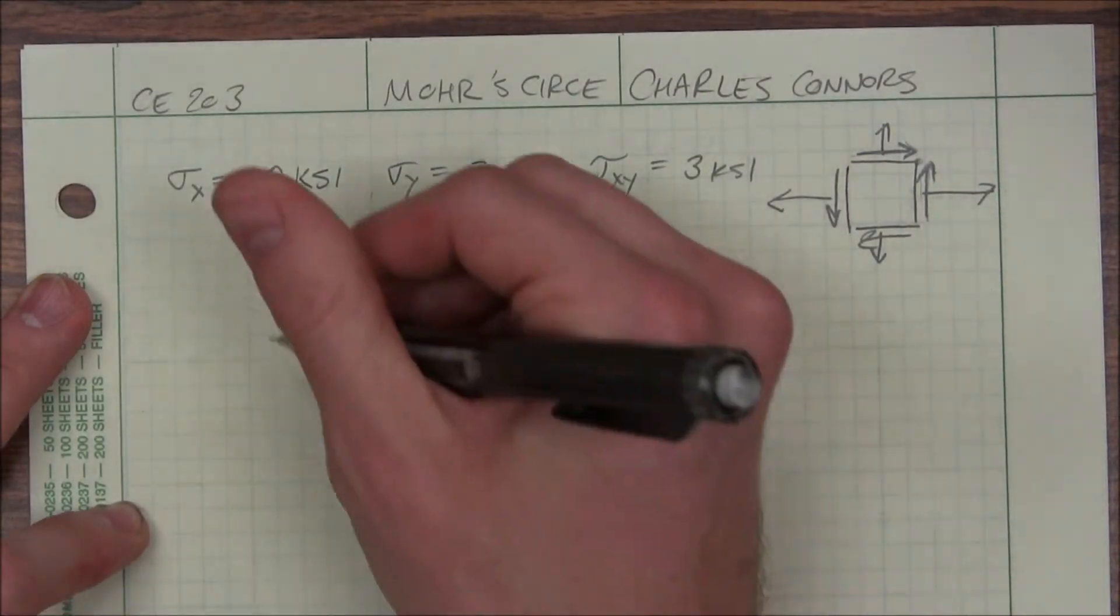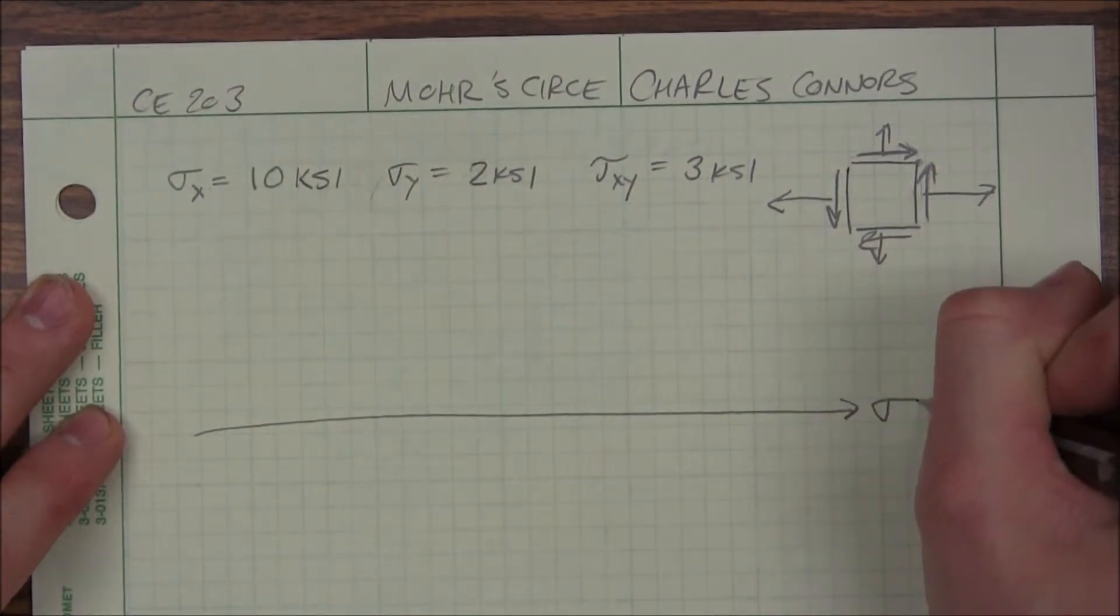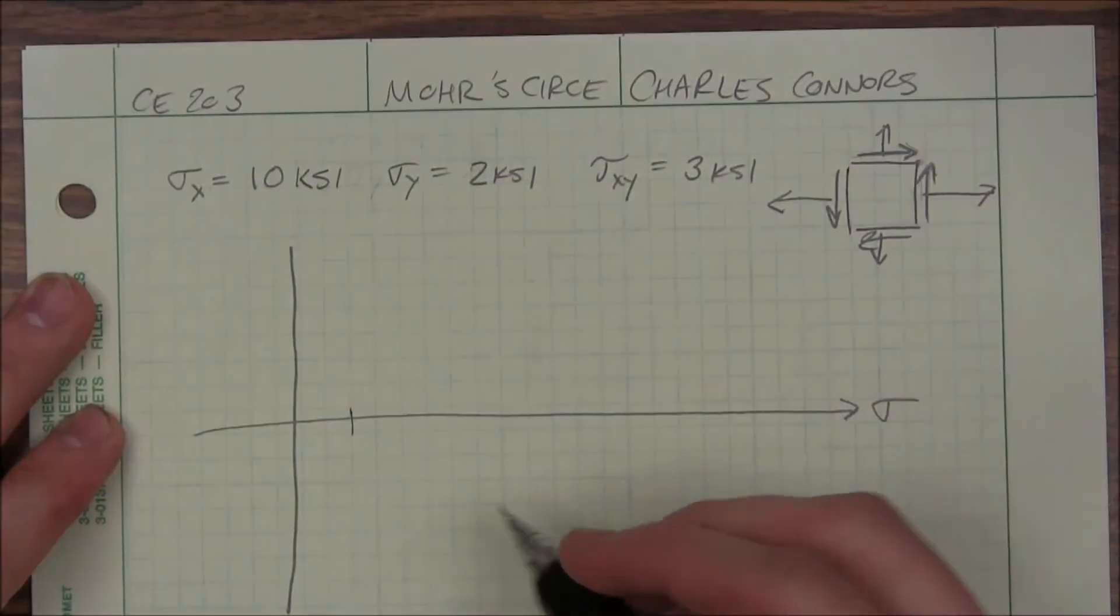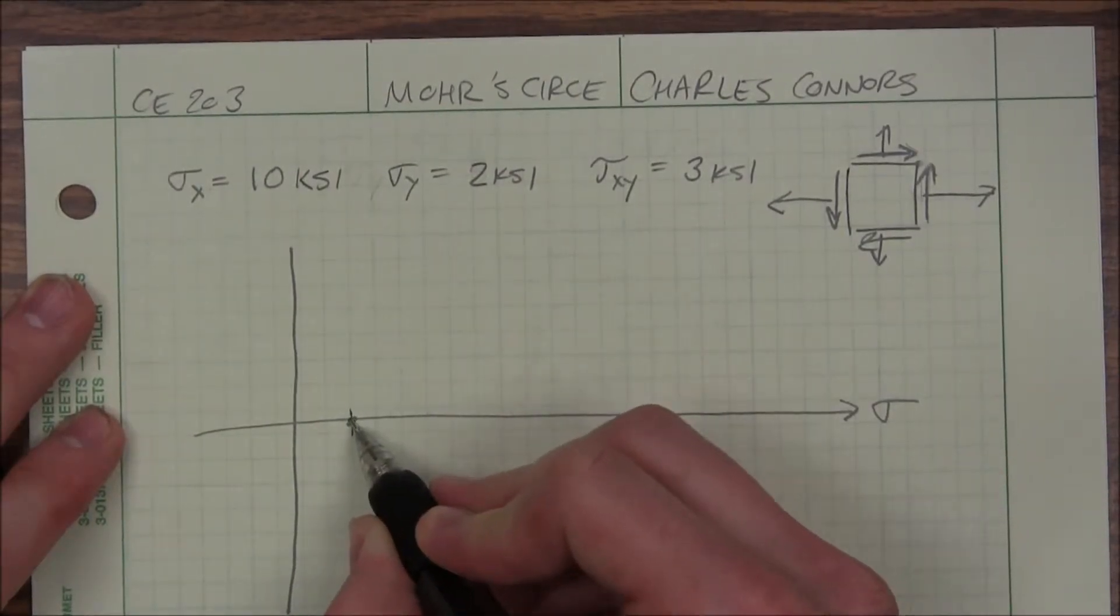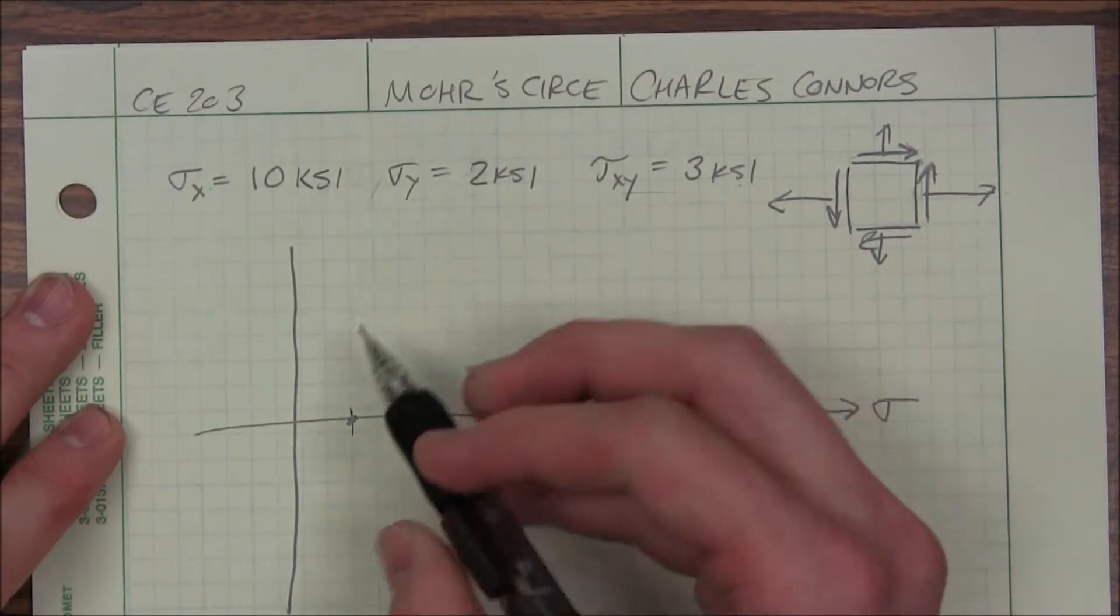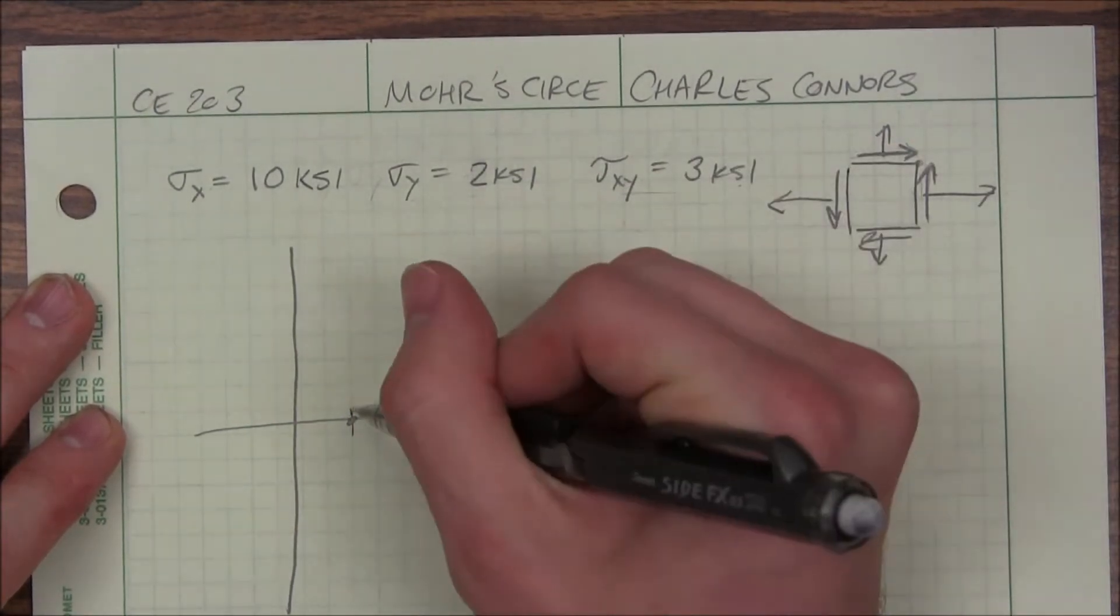Both my sigma X and sigma Y are positive, so I have my sigma axis. I'm going to leave myself plenty of positive room here. Let's plot 2 KSI, that's right here. For positive tau XY, I need to go up for my sigma Y. So up 3.